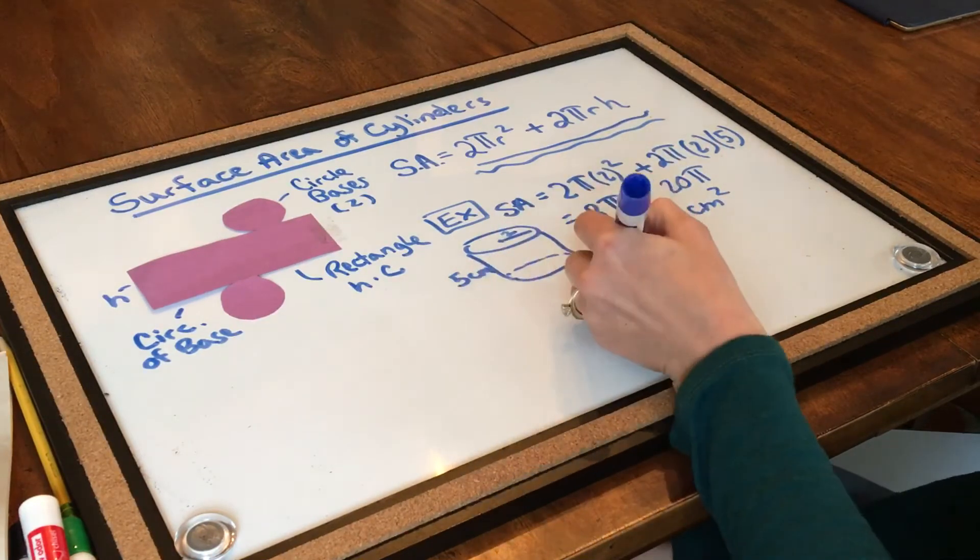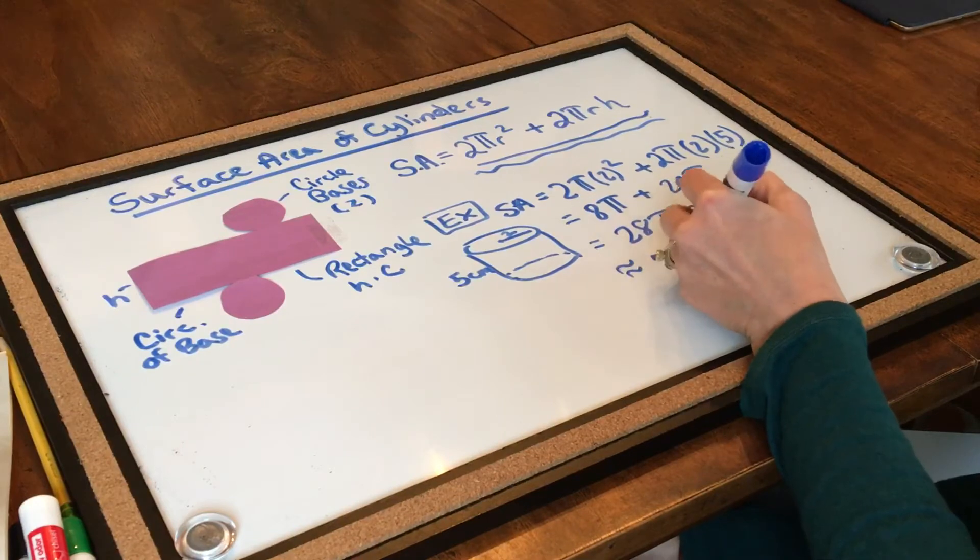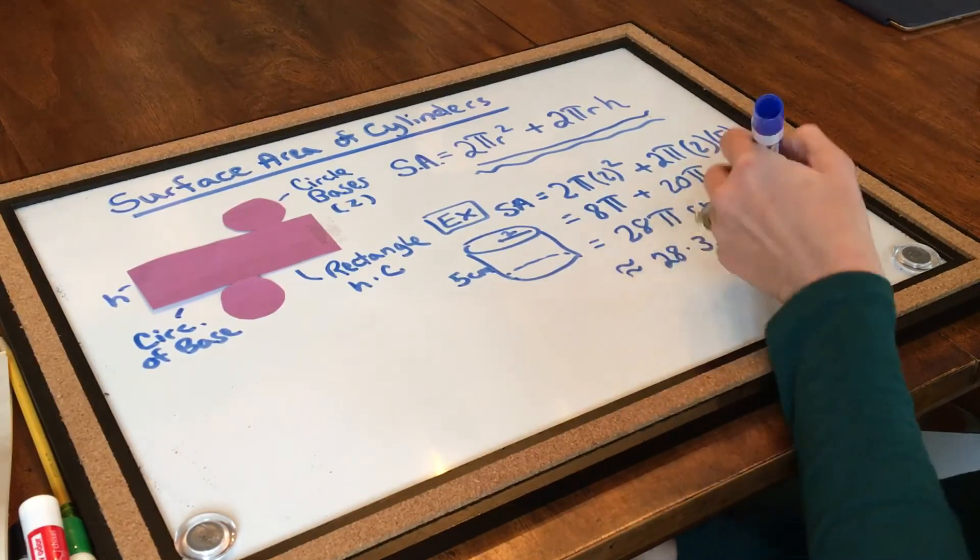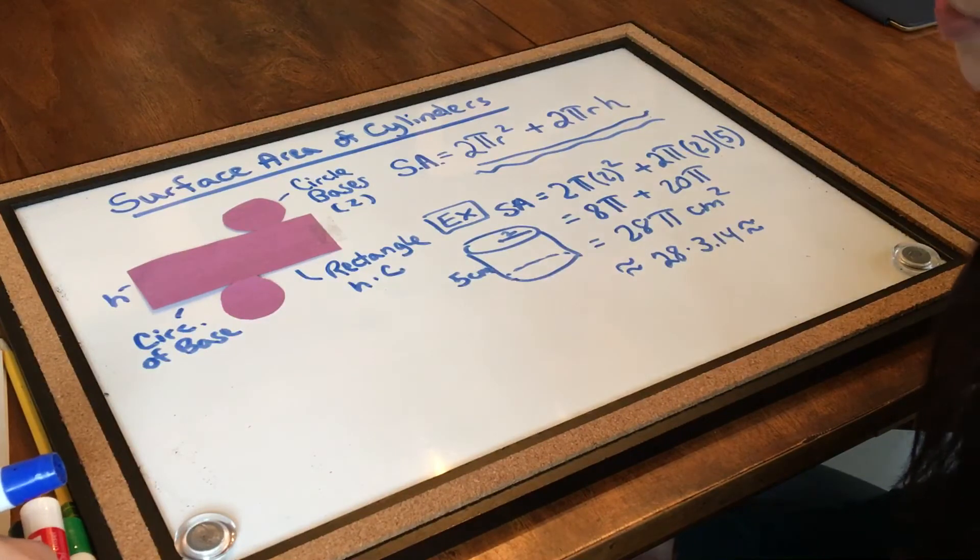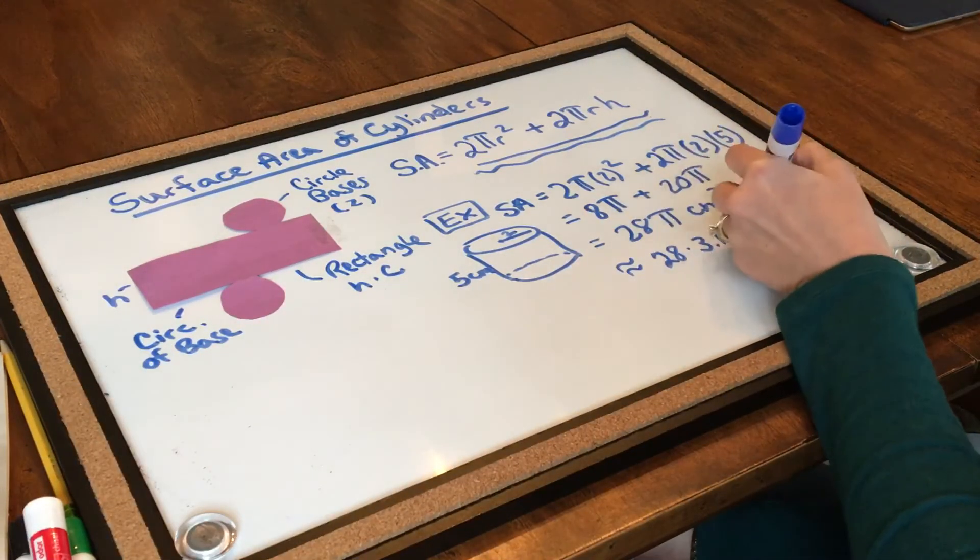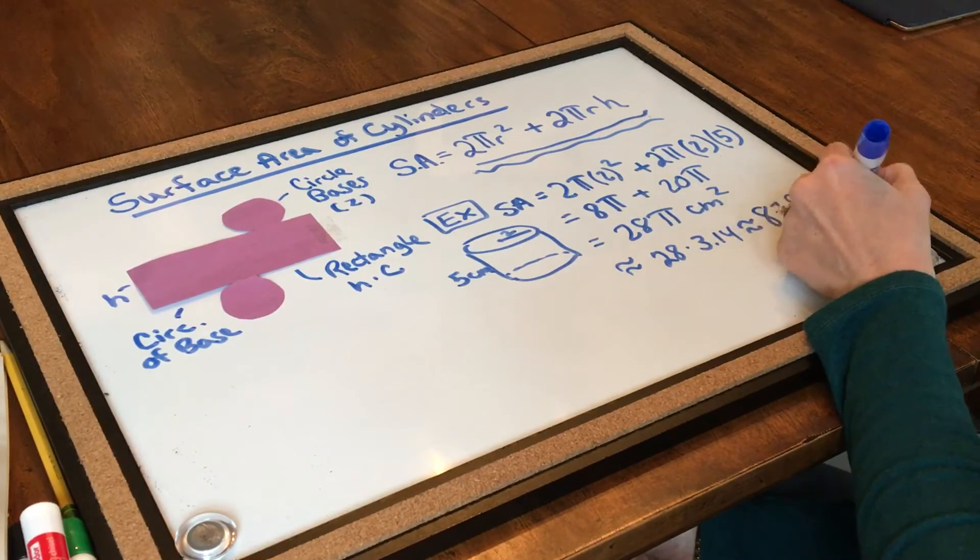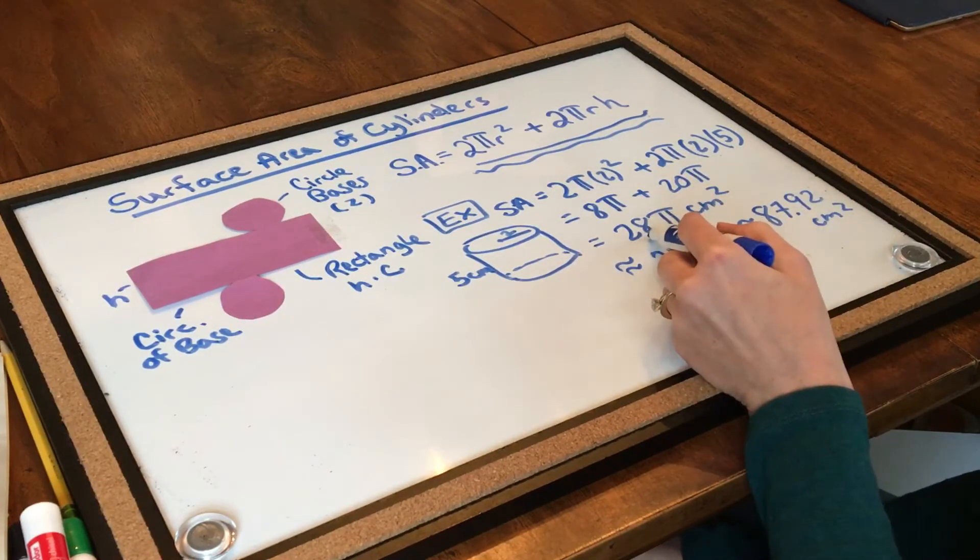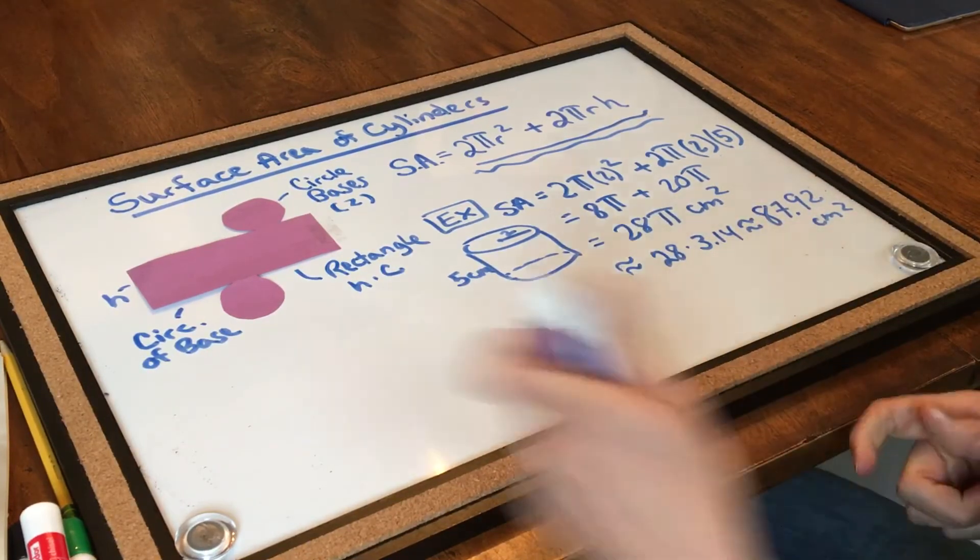Remember though, I can always find an approximate by taking 28 and multiplying it by 3.14 for pi. If I do that, I get an approximate answer of around 87.92 centimeters squared. So exact answer and approximate answer, both of these are acceptable.